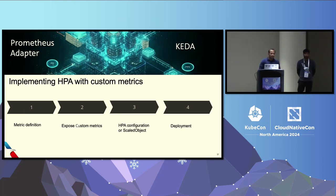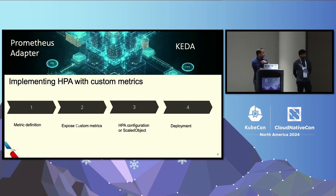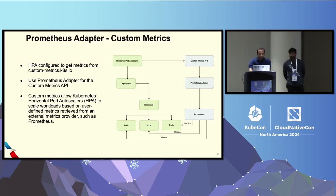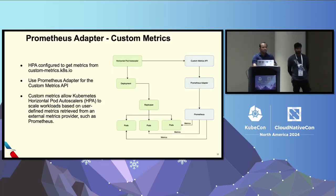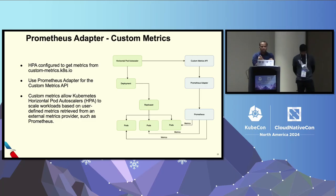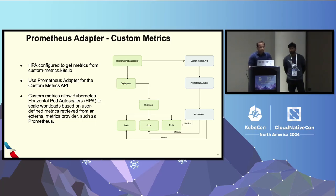Now let's see how we can use custom metrics to scale HPA. In this demo, we'll see how to use Prometheus Adapter and KEDA. We divided the implementation into four steps: define your metrics, expose those custom metrics, and then configure HPA to scale on those custom metrics. Let's first look at how to use Prometheus Adapter to scale based on custom metrics.